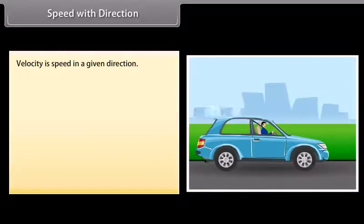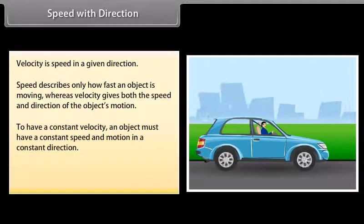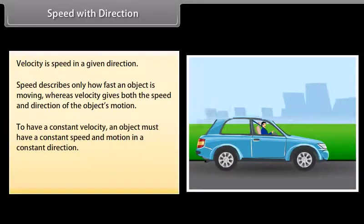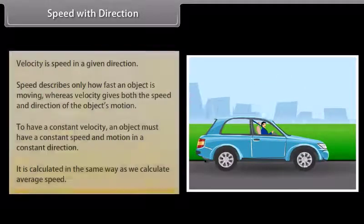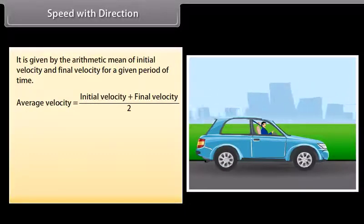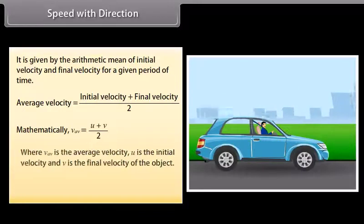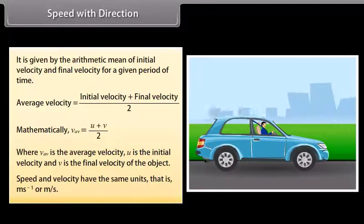Speed with direction — Velocity. Velocity is speed in a given direction. Speed describes only how fast an object is moving, whereas velocity gives both the speed and direction of the object's motion. To have a constant velocity, an object must have a constant speed and motion in a constant direction. Average velocity is equal to initial velocity plus final velocity divided by 2: V_av = (U + V) / 2, where V_av is the average velocity, U is the initial velocity, and V is the final velocity. Speed and velocity have the same units: meter per second.